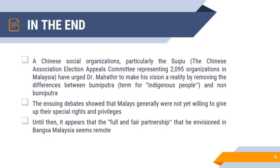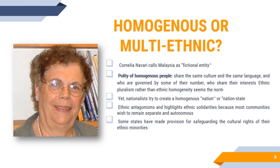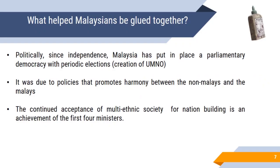Political scientist Horwitz calls Malaysia a 'fictional entity.' Nationalists in Malaysia attempted to create a homogeneous people sharing the same culture and language. However, the challenge was that when a nationalist leader of the dominant ethnic majority tries to integrate or assimilate other ethnic communities, it creates ethnic antagonism among communities that wish to be autonomous. What helped glue Malaysia together politically was parliamentary democracy with periodic elections, which led to the creation of UMNO, which wanted to protect the interests of both Malays and non-Malays.